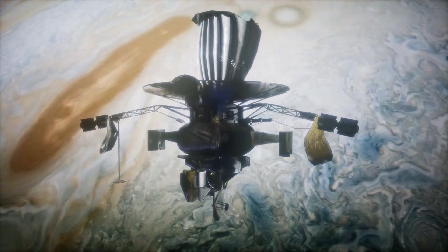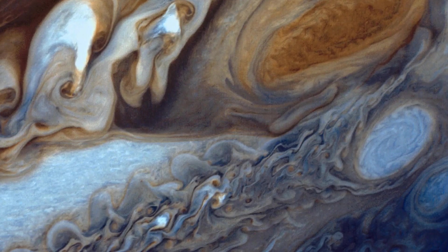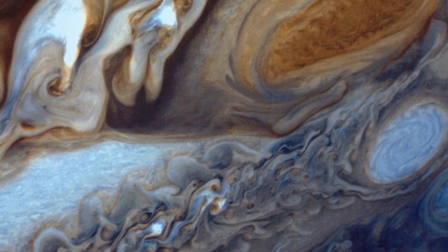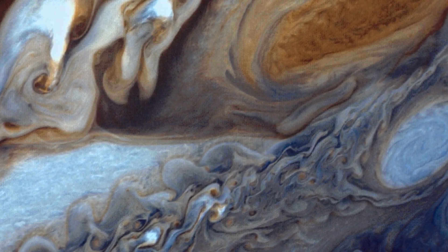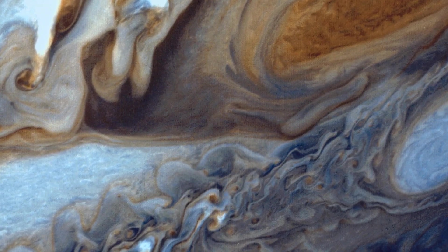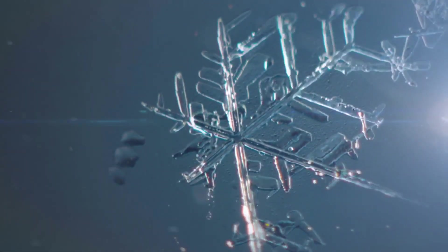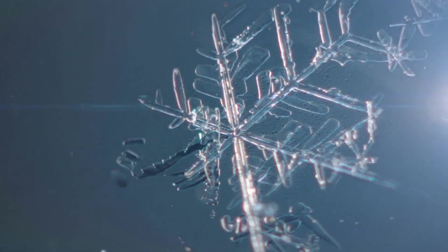But Europa gets its energy from a different source. Its gravitational push and pull with Jupiter, as well as two other Galilean moons, triggers a tidal variation in gravity, which releases heat. And this heat is what prevents Europa's water from freezing.